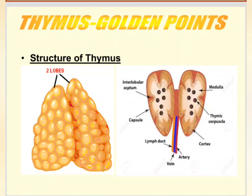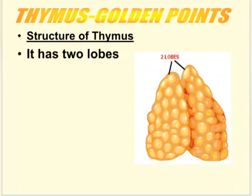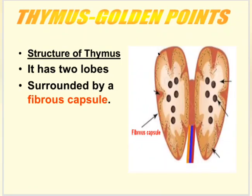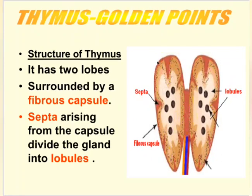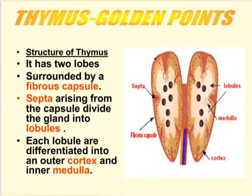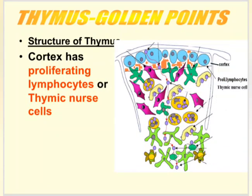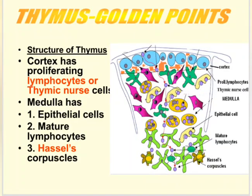Thymus Golden Point segment. Looking at the external structure and cross-section: the thymus has two lobes — a bi-lobed structure. Each lobe is surrounded by a fibrous capsule. From the fibrous capsule, septa arise and divide the entire lobe into small lobules. Each lobule is differentiated into an outer region called the cortex and an inner region called the medulla. The cortex region has actively proliferating lymphocytes, otherwise called thymic nurse cells. The medulla region of each lobe consists of three important cells: epithelial cells, mature lymphocytes, and Hassall's corpuscles.